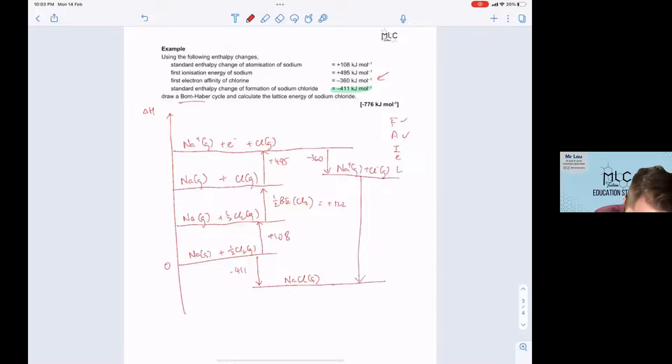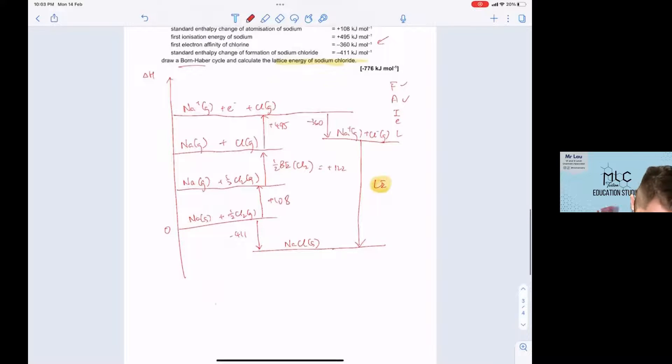To join up this will be your lattice energy, which is what they are requesting you to find. The lattice energy of sodium chloride. So the lattice energy equals to, from here to here this is point A this is point B, we have to go in this direction.